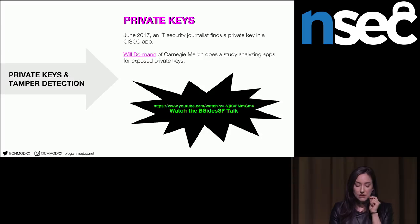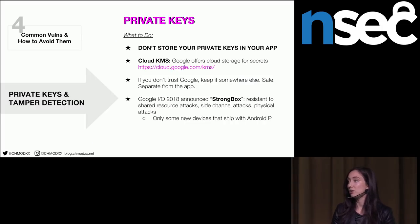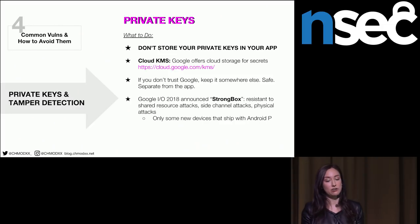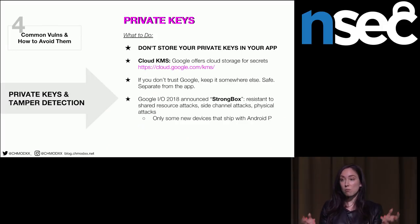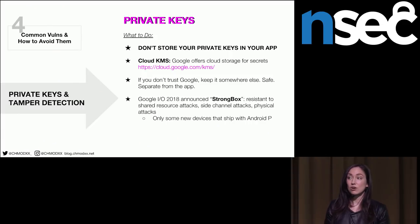Google offers cloud storage for secrets and sensitive information — that's a good way to go. If you don't trust Google, keep your private key somewhere else, just not in your application. Also from Google I/O 2018, they announced StrongBox — kind of like the Java KeyStore but stronger. It's resistant to shared resource attacks, side channel attacks, and physical attacks. But again, only useful for devices that ship with Android P.